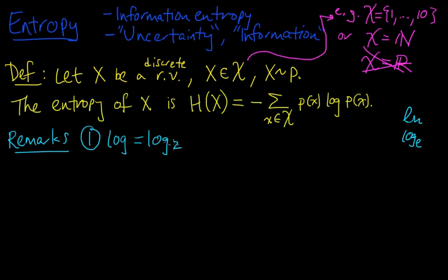If I'm not going to use the base 2 log, then I will specifically write the base as a subscript. So for example, if the base is B, then we would write log base B, and then the entropy defined using the base B log, we would denote by H sub B of X.